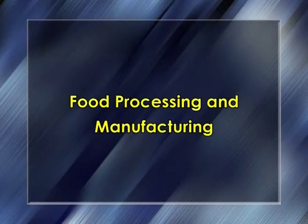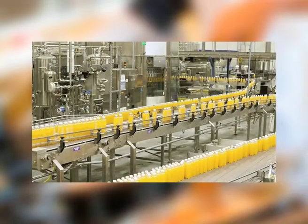Food processing is the treatment of food substances by changing their properties to preserve it, improve its quality or make it functionally more useful. Food manufacturing is the mass production of food products from raw animal and plant materials using principles of food technology.